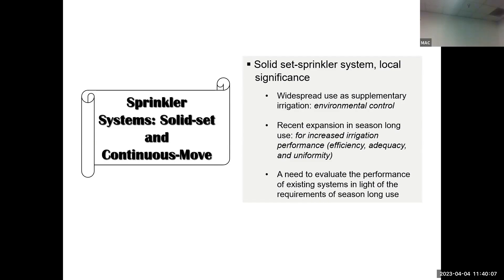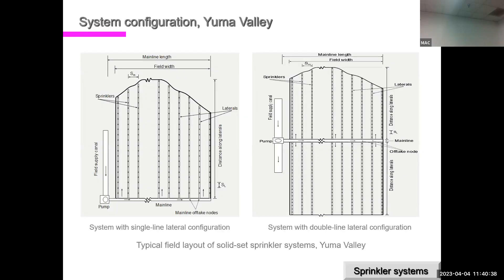Modeling work has also been done on sprinkler systems in the Yuma area. There is widespread use of sprinkler irrigation for supplementary irrigation and environmental control in the early vegetable growing season, and over the last 20 years there has been expansion to season-long use. Two common field configurations exist: single-line lateral (main line across the head end with laterals on one side) and double-line lateral (main line running through the middle, irrigating two lines of laterals on either side).